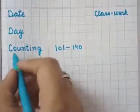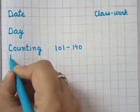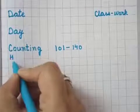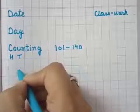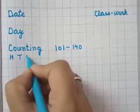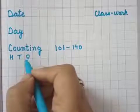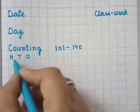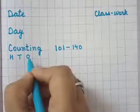Now here write down: H — H for Hundred, T — T for Tens, O — O for Ones. Hundred, Tens, Ones.